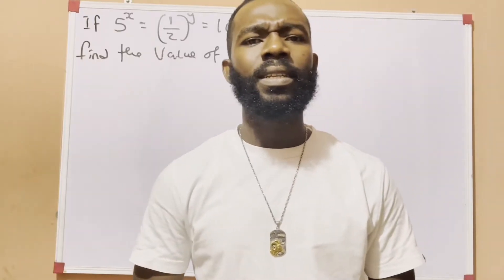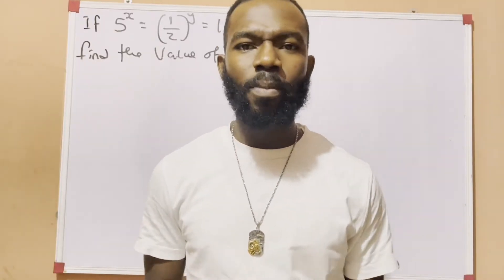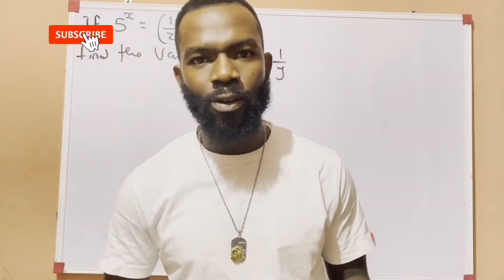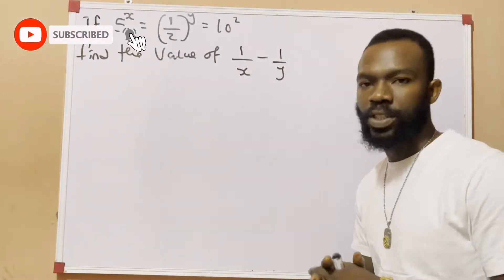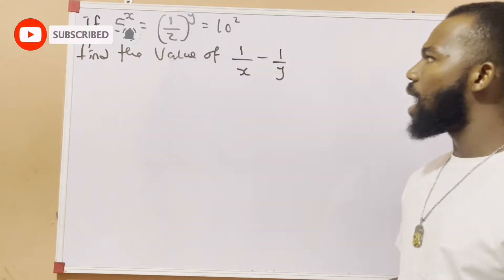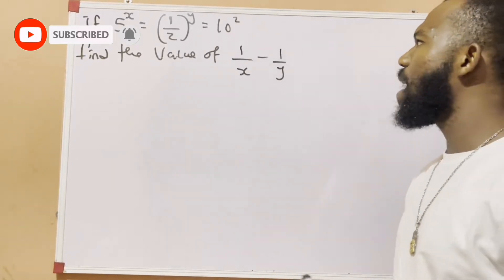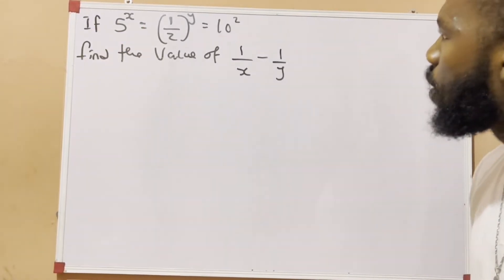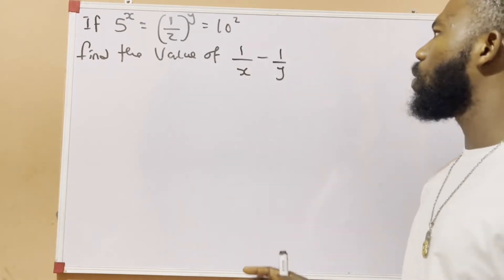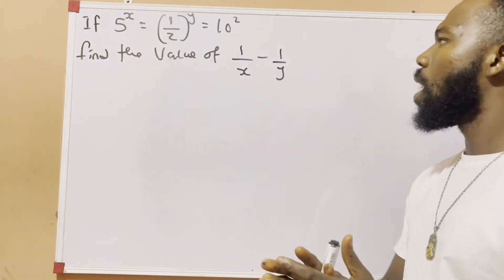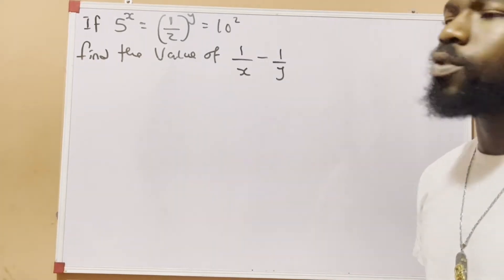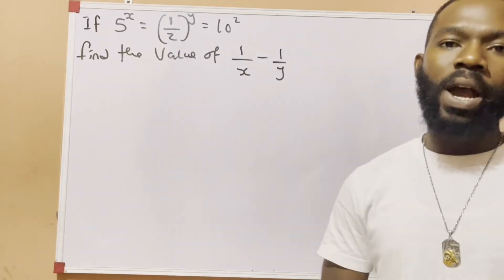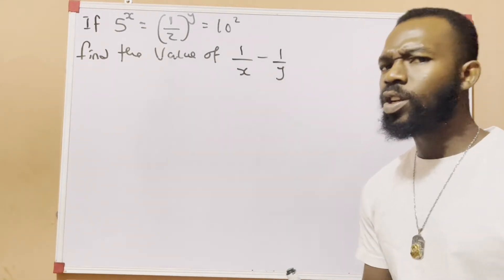Hello, my lovely viewers, welcome again to Math Management. It is your favorite presenter, Jeff. Today we have a question: if 5 raised to the power of x equals 1 over 2 raised to the power of y equals 10 raised to the power of 2, we have to find the value of 1 over x minus 1 over y.